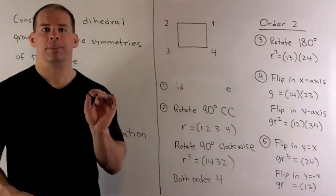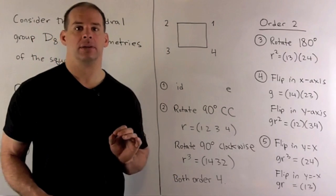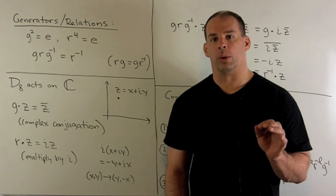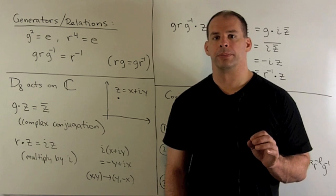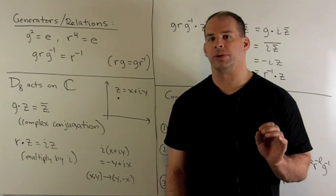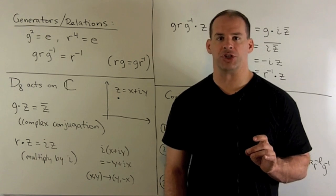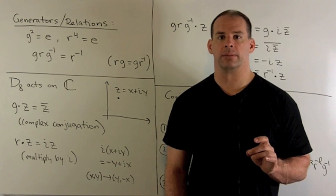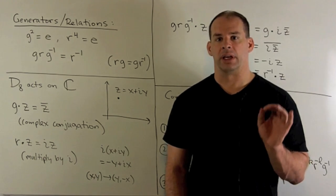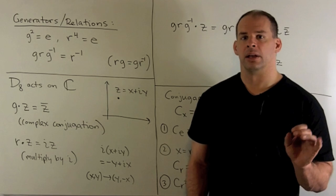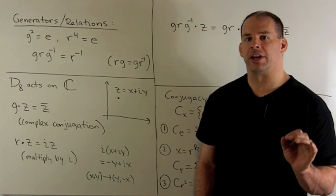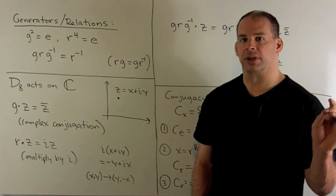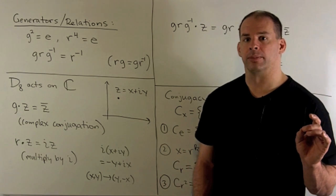Finally, if we fix the line Y equals minus X, we'll fix two and four, and then we're going to switch one and three. That element is going to be G times R. So we have our eight elements. When we compute, we want to avoid using the permutation notation. Instead, let's look at the generators and relations for D8.